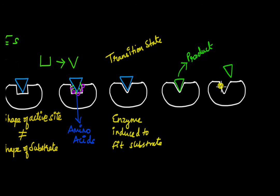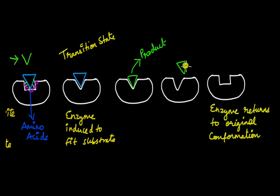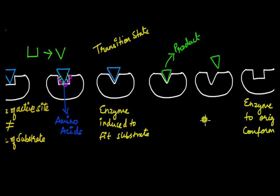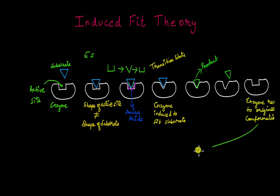After the product is released, there are no more bonds in the enzyme's active site keeping it in the changed shape, so the active site returns to its original conformation. This was the original shape; it changed to fit the substrate, and now it goes back to its original conformation. As the enzyme returns to its original conformation, it is free to react with more substrates, thus continuing the reaction.